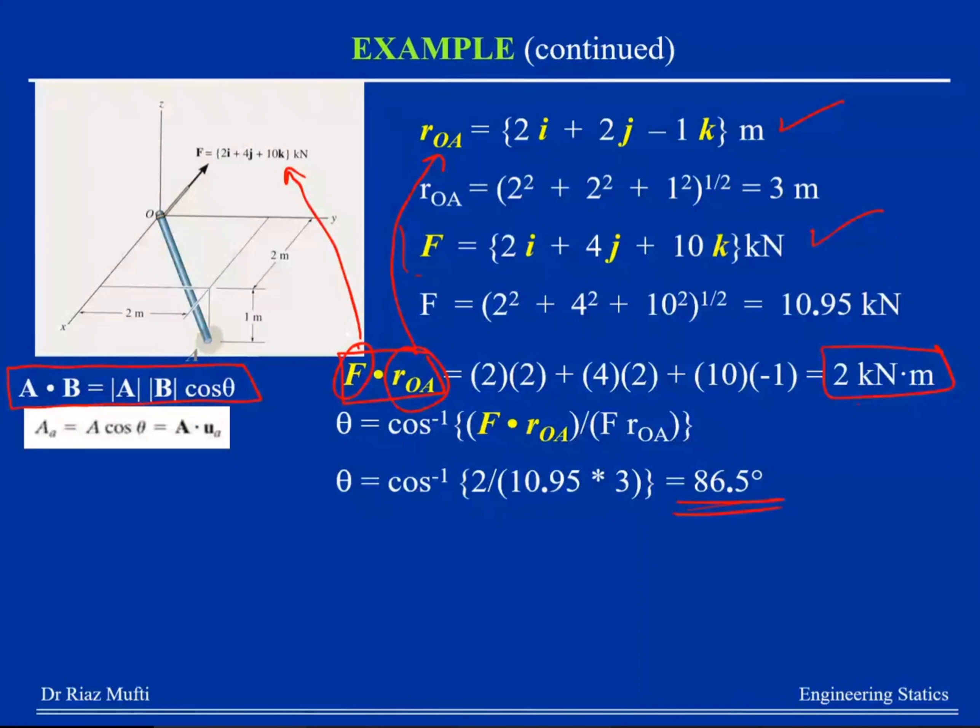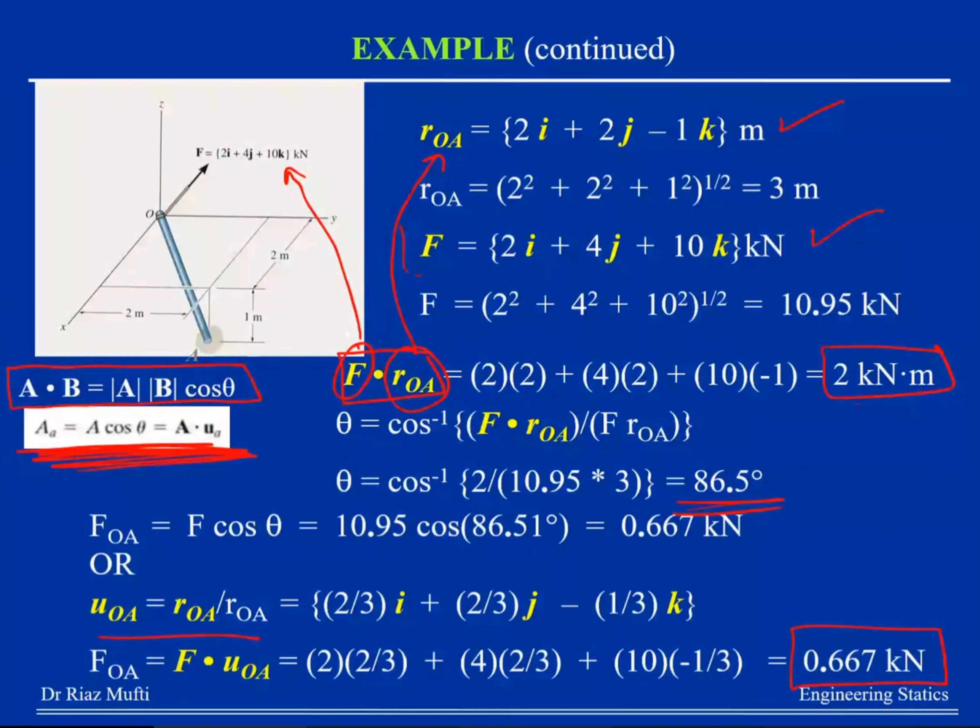I can get, remember, look, I can get the projection of F on OA. Yes sir, look, 6, 7. And that is basically given here. Is that clear to everyone? Is that clear to everyone?